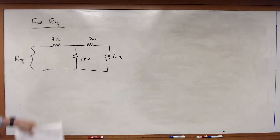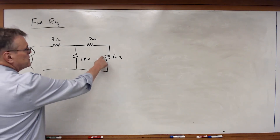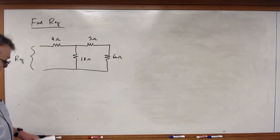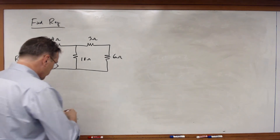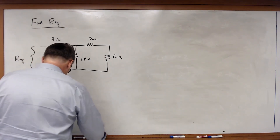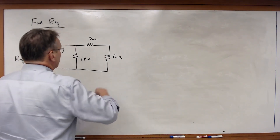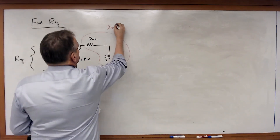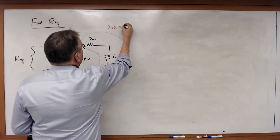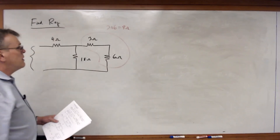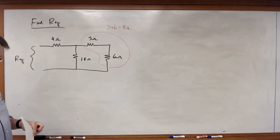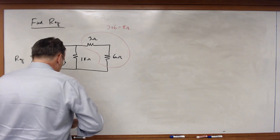Are any resistors connected between the same two nodes — in parallel? No. But the 3-ohm and 6-ohm resistors are clearly in series. Combining them: 3 plus 6 equals 9 ohms. We replace those two with a single 9-ohm resistor and redraw the circuit.